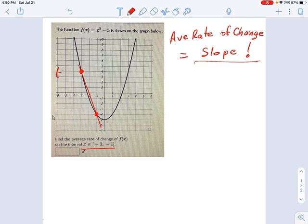This point over here is negative 3 comma 4. And this point over here is negative 1 comma negative 4. And now using those two points, we're going to find slope. So let's think about what we know.